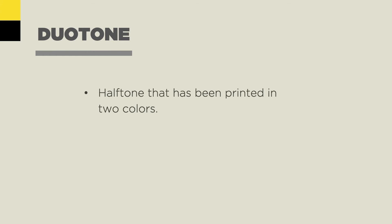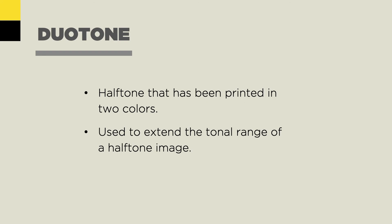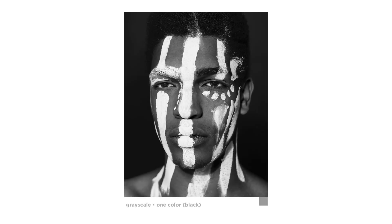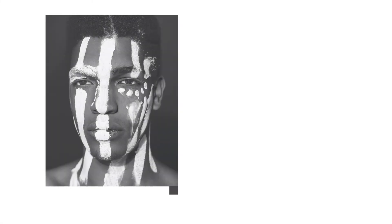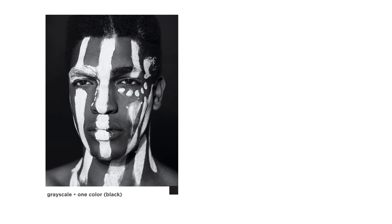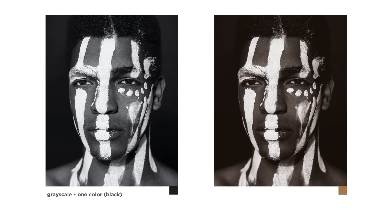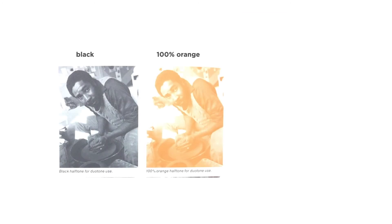A duotone is a halftone printed in two colors, and they're used to extend the tonal range of a halftone image. When printing a grayscale image, it has the tendency to look pale and flat using just one printing ink, because not all blacks are equal — process blacks look paler than black mixed with other process colors. But if you're constrained to a budget of two colors, you can use duotones. Here, a grayscale image is printed in another color to give it more body and make it look richer.